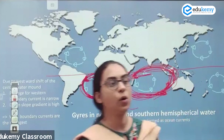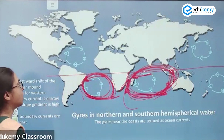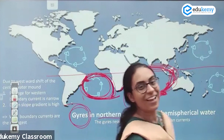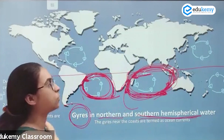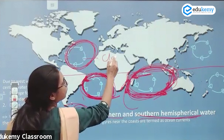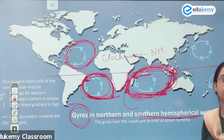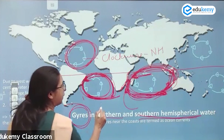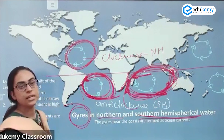What do we call this? We call this a gyre. These are called gyres. There are many gyres in the northern hemisphere as well as the southern hemisphere. The movement is circular. The movement is clockwise in the northern hemisphere, whereas the movement is anti-clockwise in the southern hemisphere.